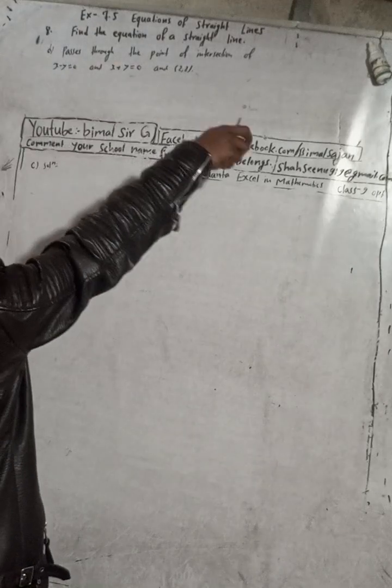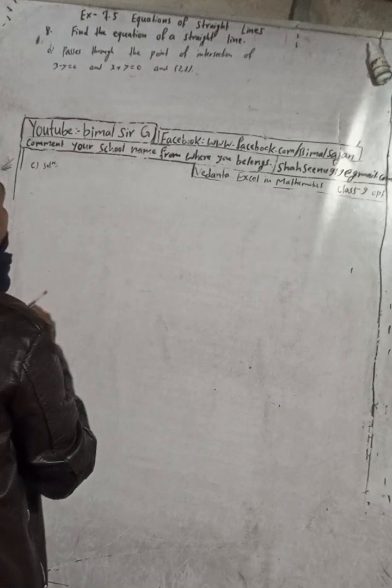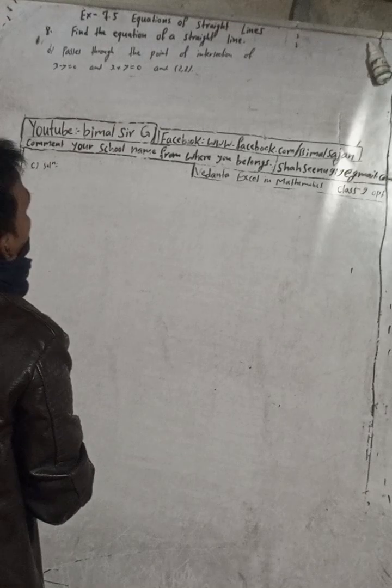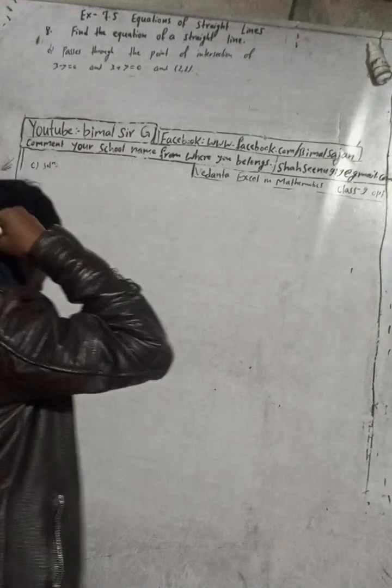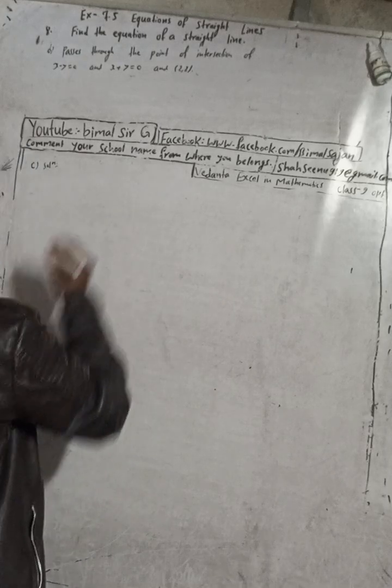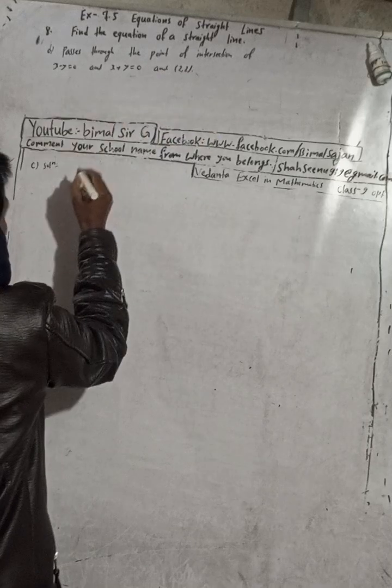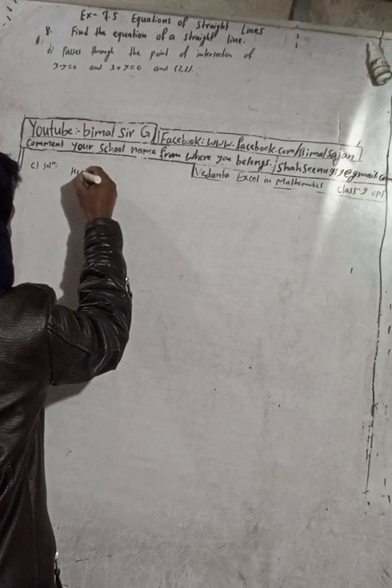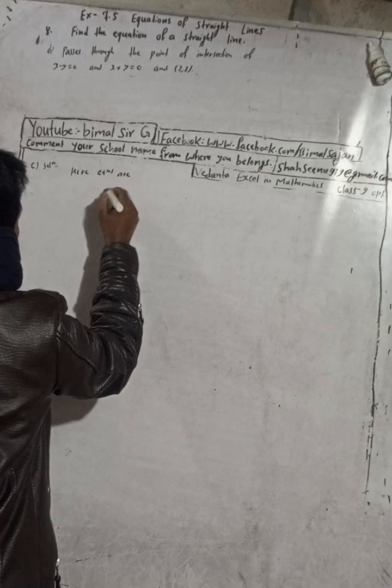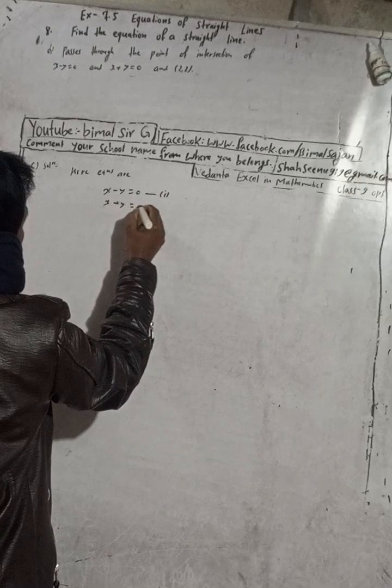Here's the question: find the equation of a straight line that passes through the point of intersection of x minus y equals 0 and x plus y equals 0, and the point 2 comma 2. Here is given point of intersection, so given equations are x minus y equals 0 and x plus y equals 0.